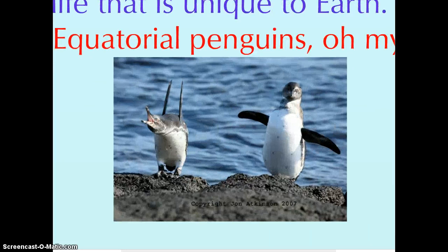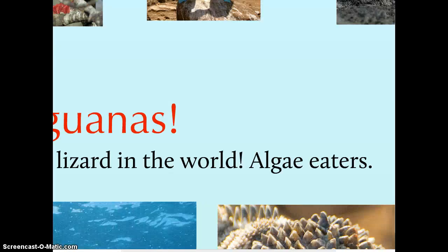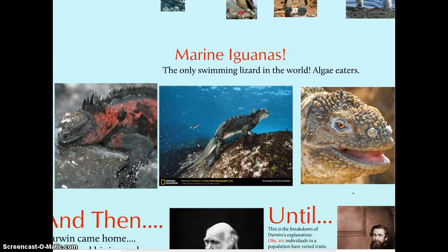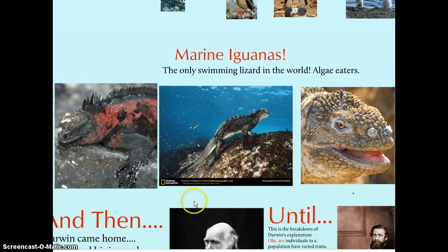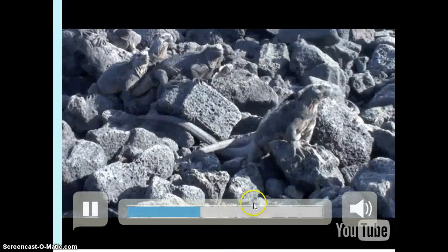At the equator, you find equatorial penguins — organisms brought in from all sorts of locales living on the islands. And of course the marine iguanas, another famous group: the only lizards in the world that swim and eat algae off rocks. Since they swim around in saltwater, they need a means of regulating salt balance, and they can actually expel highly concentrated saltwater through their nostrils.